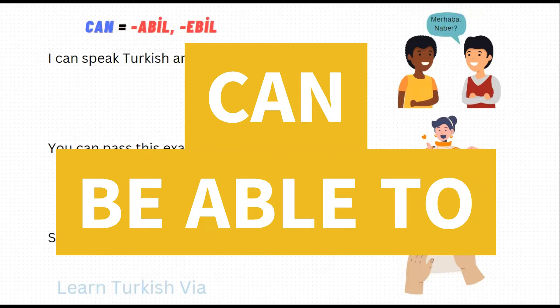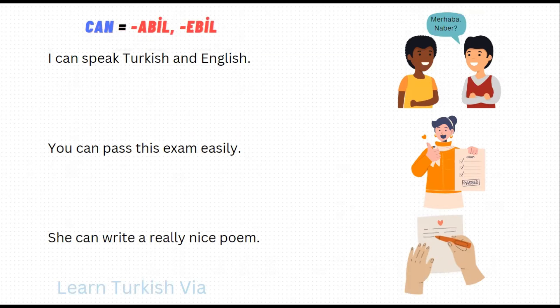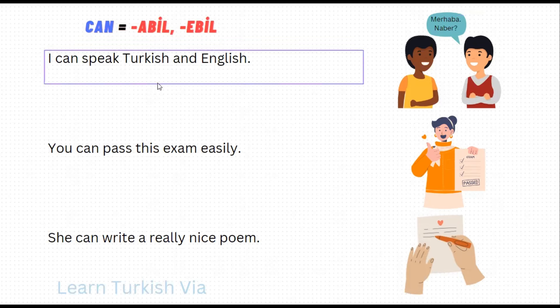Hello friends, merhaba arkadaşlar. In this lesson we are going to have some exercises about the modal verb 'can'. In Turkish, instead of can, we use 'abil' or 'ebil'. Now let's see an example sentence to see how we use this suffix.